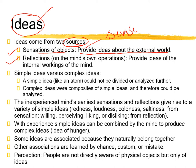We receive impressions from our five senses — what we see, hear, speak, smell, and touch. The second type is reflection. Reflection refers to the mind's own operation on the data received from the five senses.